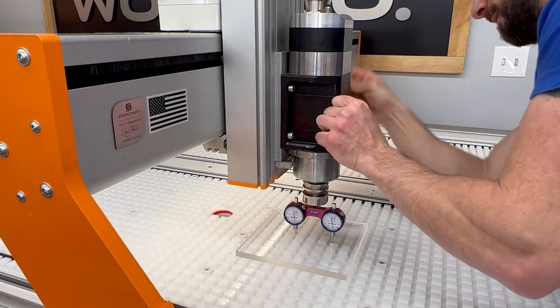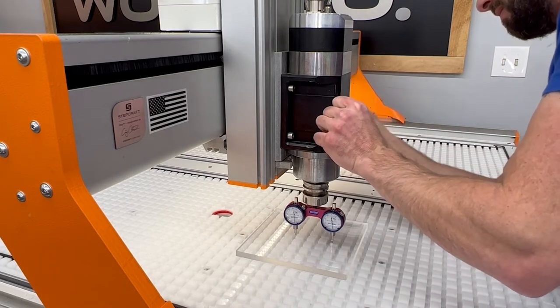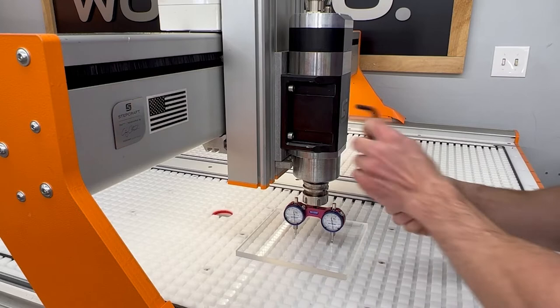Here I'm loosening all four allen head bolts that hold the spindle onto the Z axis. Use caution to not over loosen the bolts as you don't want to risk the spindle sliding down and crashing into the indicators.